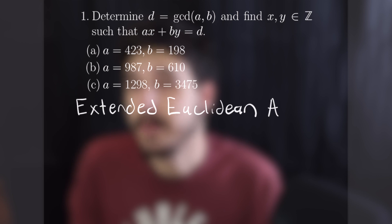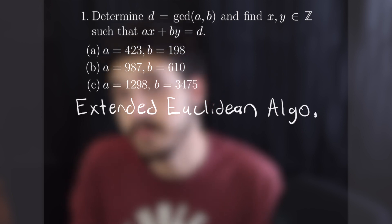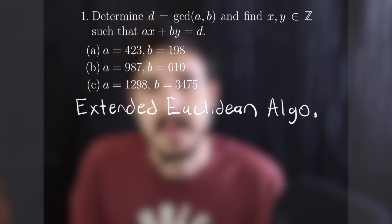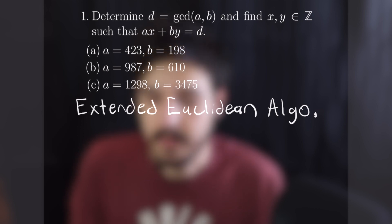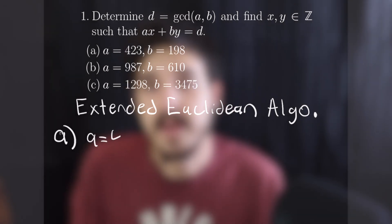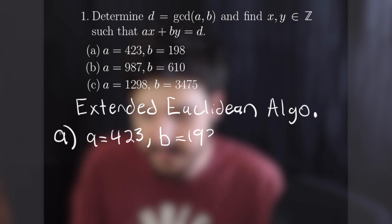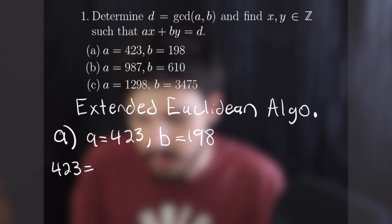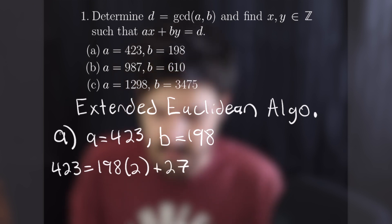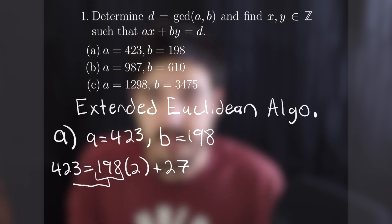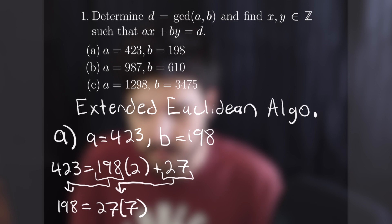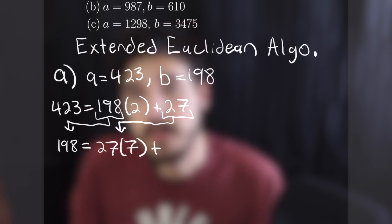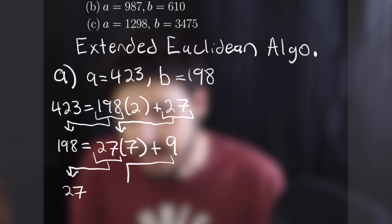Finding that linear combination can be very time-consuming, so I'm not going to go over the extended Euclidean algorithm in full detail — we have a video on the channel for that. To start, we write 423 as a multiple of 198 plus a remainder. We can fit two copies of 198 into 423, giving a remainder of 27. Bringing 198 down, we see how many 27s fit: seven copies of 27 give 189, leaving a remainder of 9. Since 9 divides evenly into 27, we stop there.